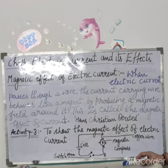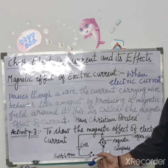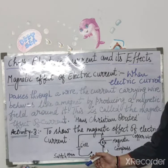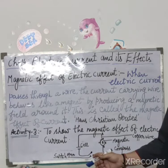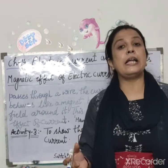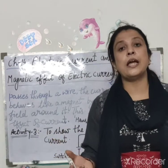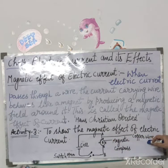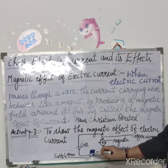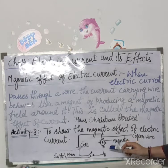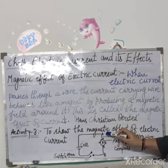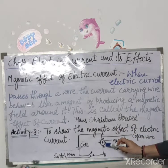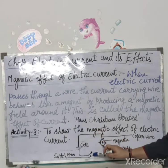Thik hai. To jo material is ke liye required hoga wo kuch is tarike se hai: a piece of insulated copper wire with bare ends — hum log insulated copper wire lenge jiske ends bare honge. Magnetic compass lenge, connecting wires lenge, aur cell switch. To kya kya hum log is activity ke liye lenge: insulated copper wire, magnetic compass, cell switch, and connecting wires.